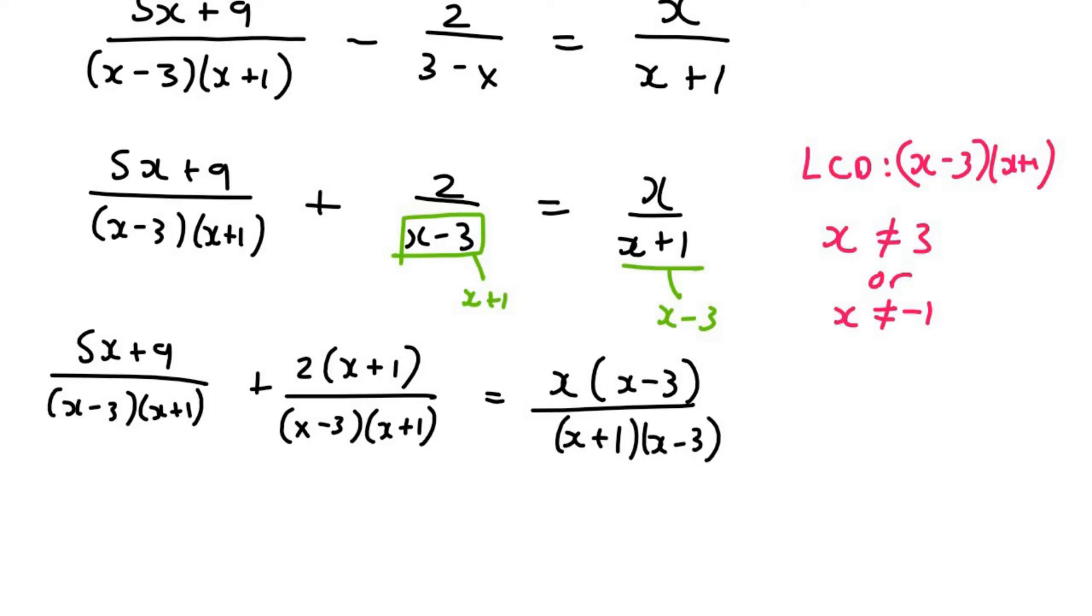Like that. Now that the denominators are the same, it all cancels out. And so now we can say 5x plus 9 plus 2x plus 2 equals to x squared minus 3x.